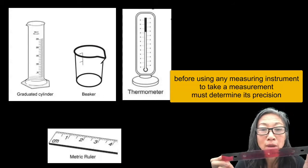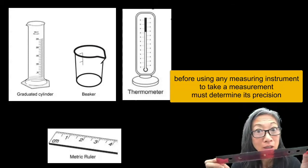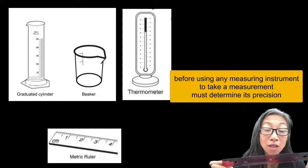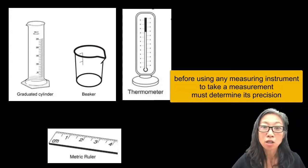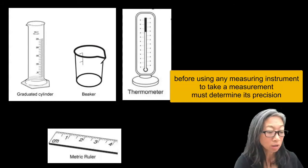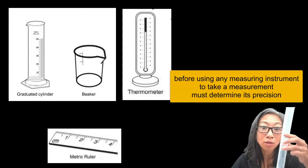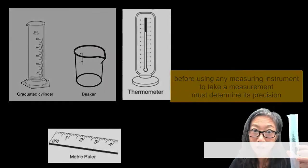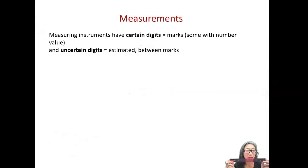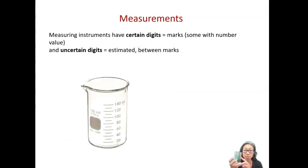What does it measure to? The tenths place in centimeters, the hundredths place in centimeters, the thousandths place, or even none of those? This is going to be true of the ruler, the beaker, the graduated cylinder, any measuring instrument that has markings on it. They all have marks on them, so there are marks and then there's also space between the marks.